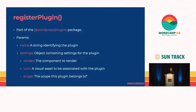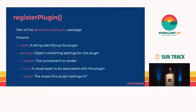Let's look at the registerPlugin function. It's part of the WordPress plugins package. It has two parameters. The first is a name — it's a string and it has to be unique among all plugins that have been registered. The second is a settings object with three properties. The first property, render, is the only one required, and it refers to a component that will be rendered — inside that component we can have one or more fills.